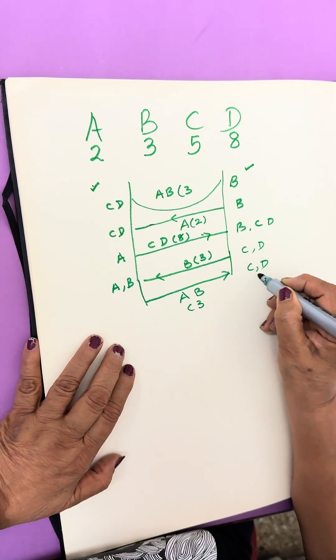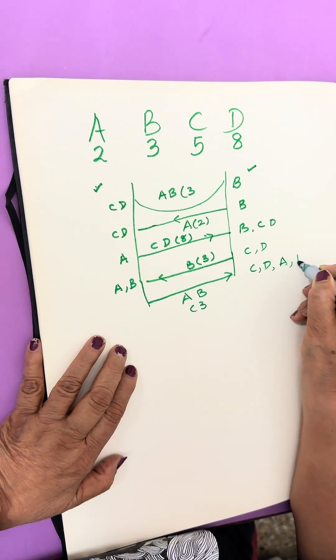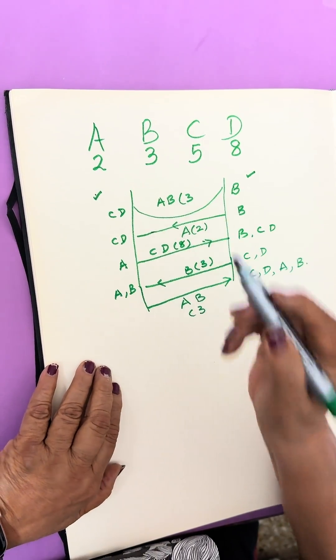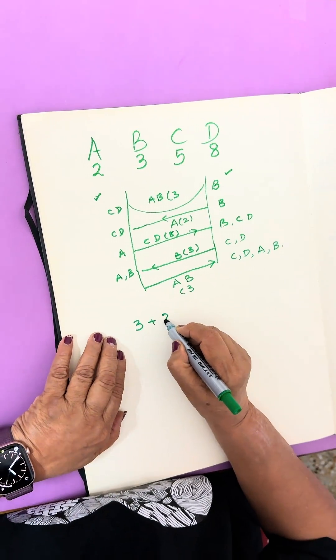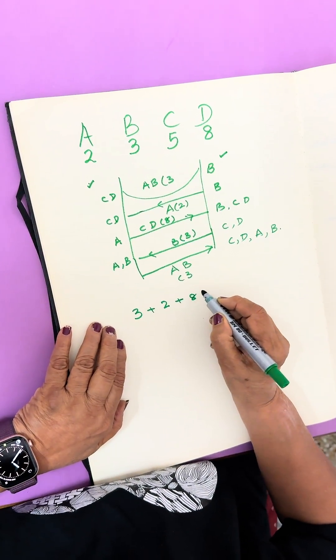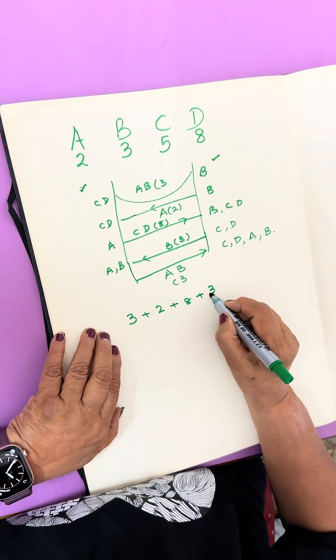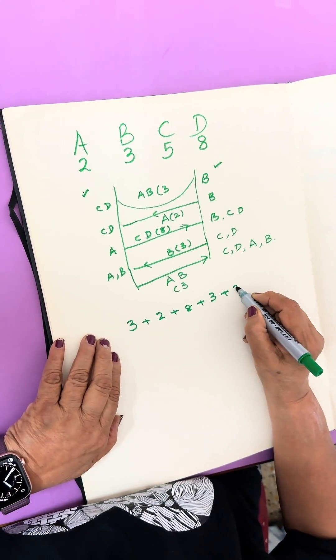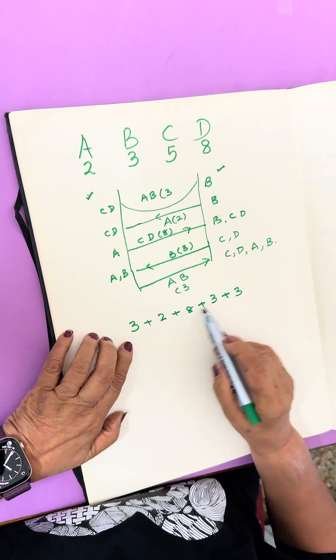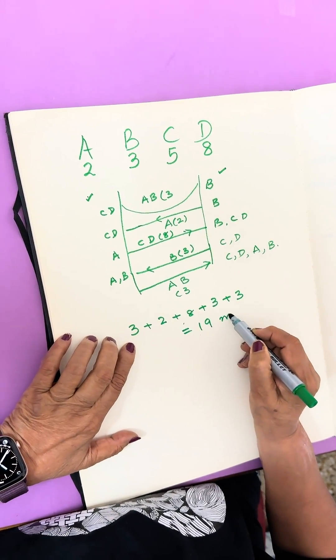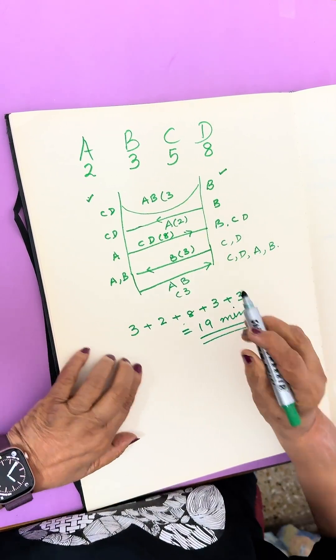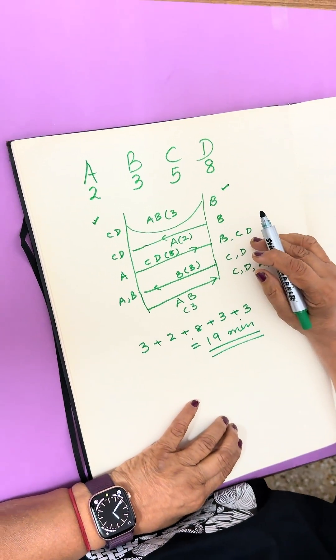A and B will also reach this side. All four have reached this side. Now how much time have they taken? First 3 plus 2 plus 8 plus 3 plus 3, so that means 9 and 10, so that is 19 minutes. They will take 19 minutes to cross the bridge.